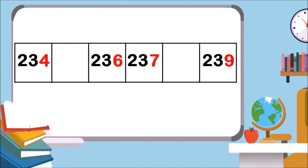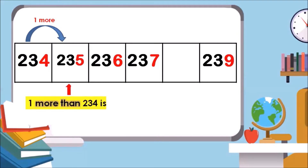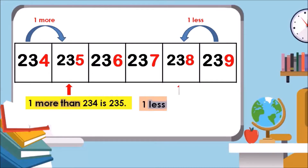Let us use the number tape to find out the missing numbers. Observe the digits in the ones place. What is one more than 234? One more than 234 is 235. What is one less than 239? One less than 239 is 238.